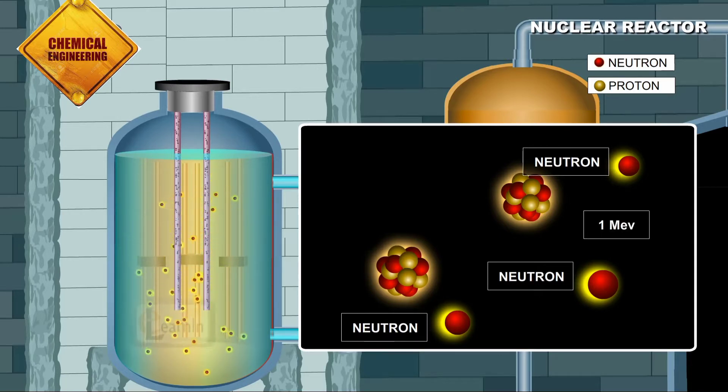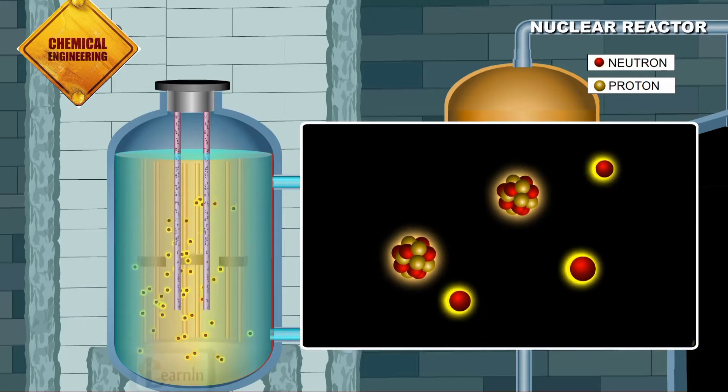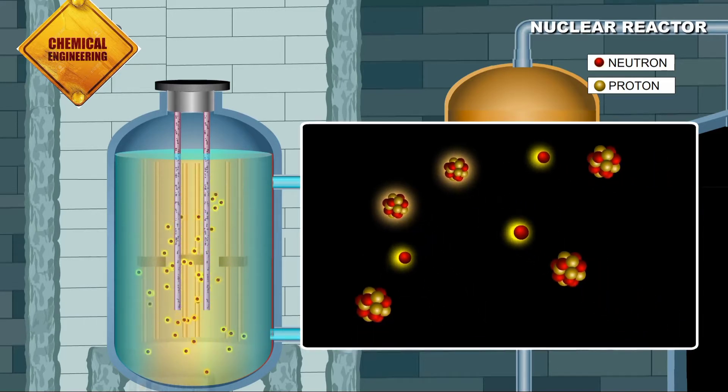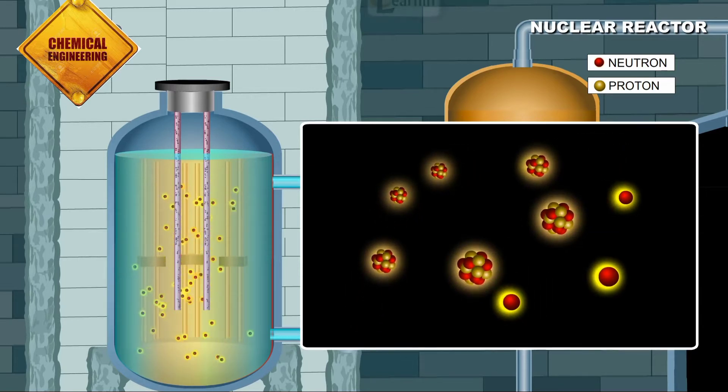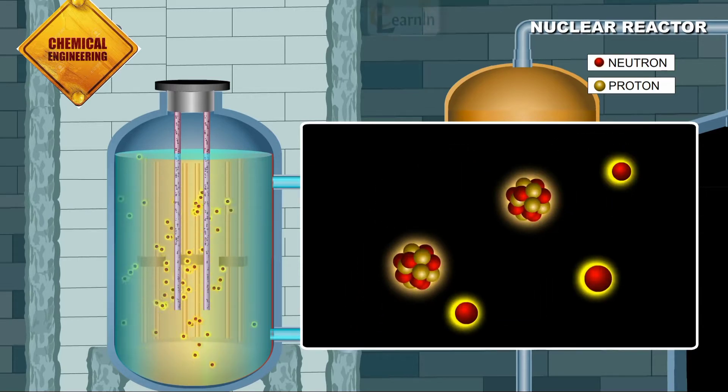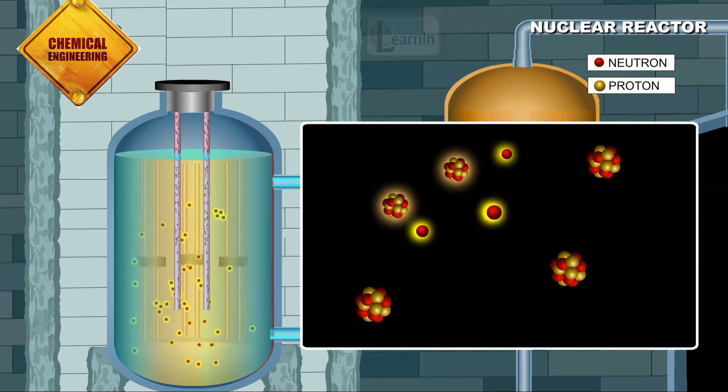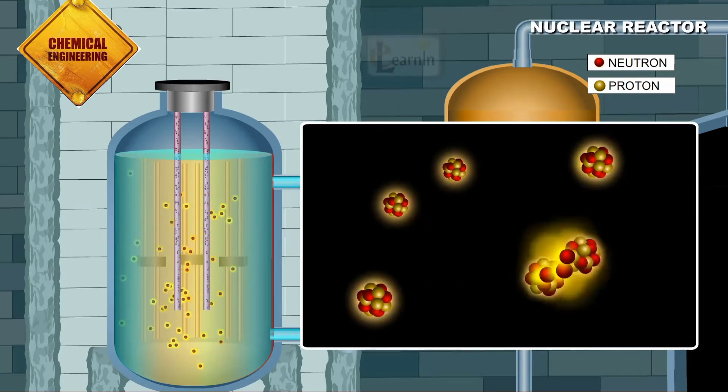These neutrons typically escape from participating in another fission process as they are accompanied by enormous energy release. In fact, the probability of these neutrons producing another fission reaction is 500 times less than that compared to a thermal neutron.